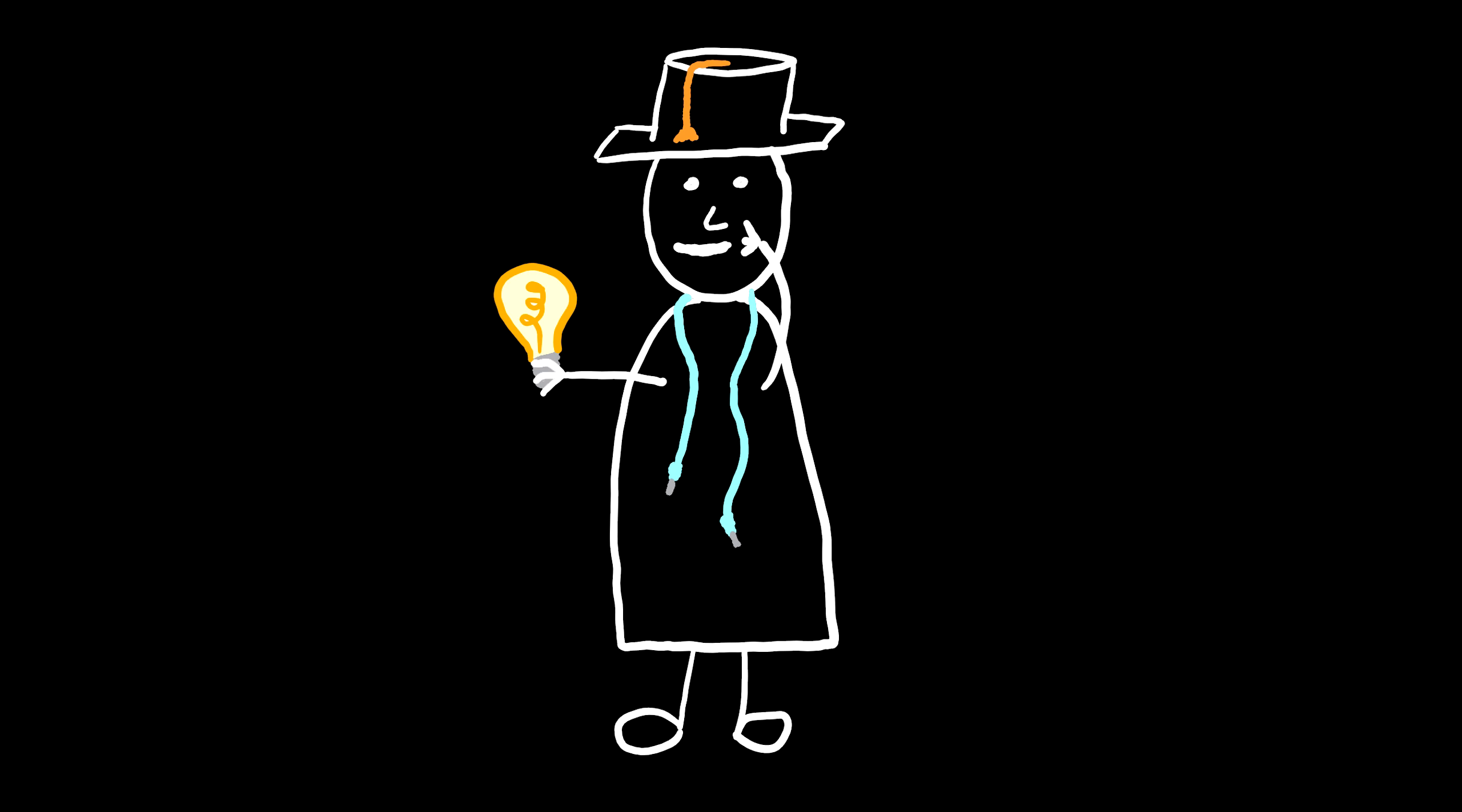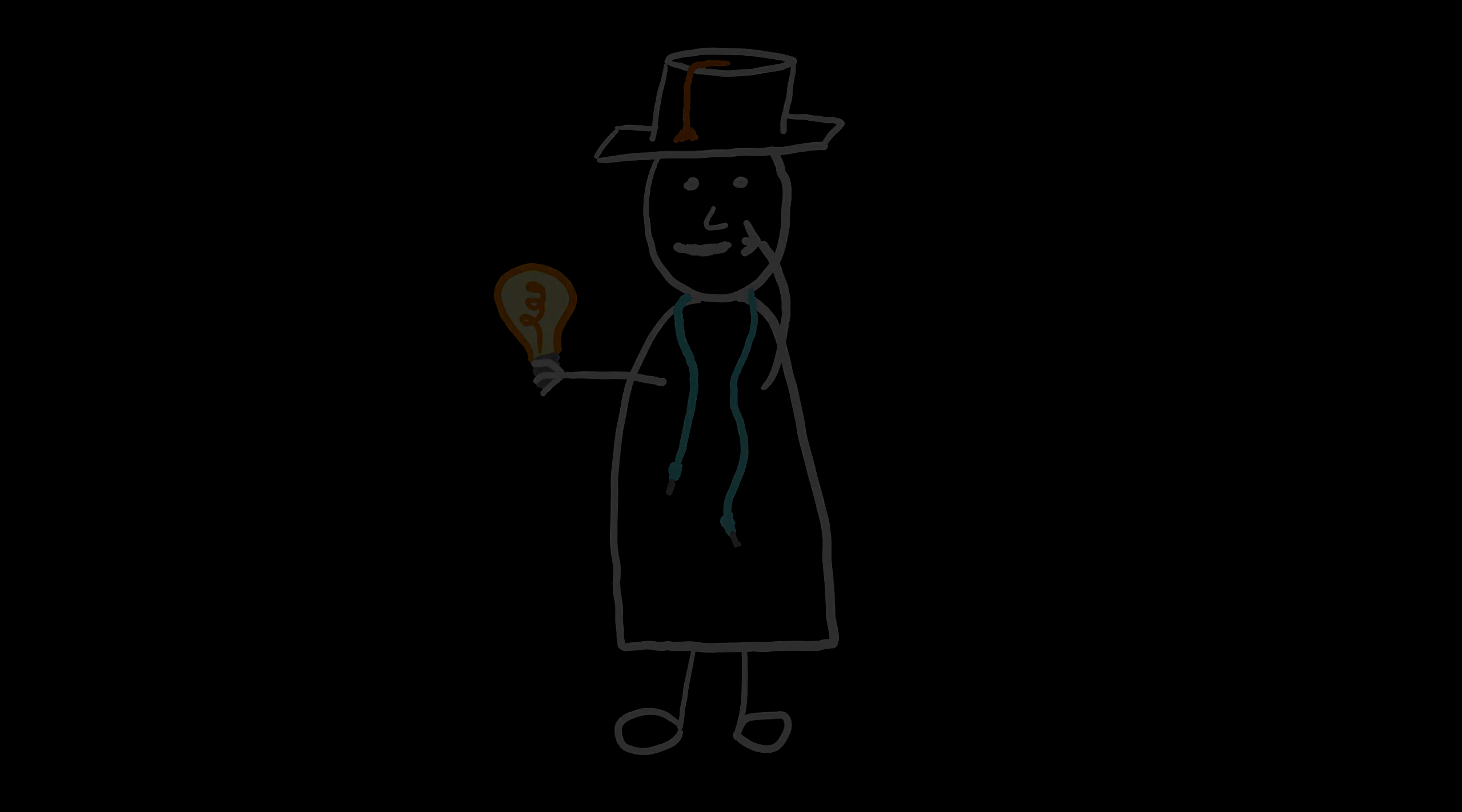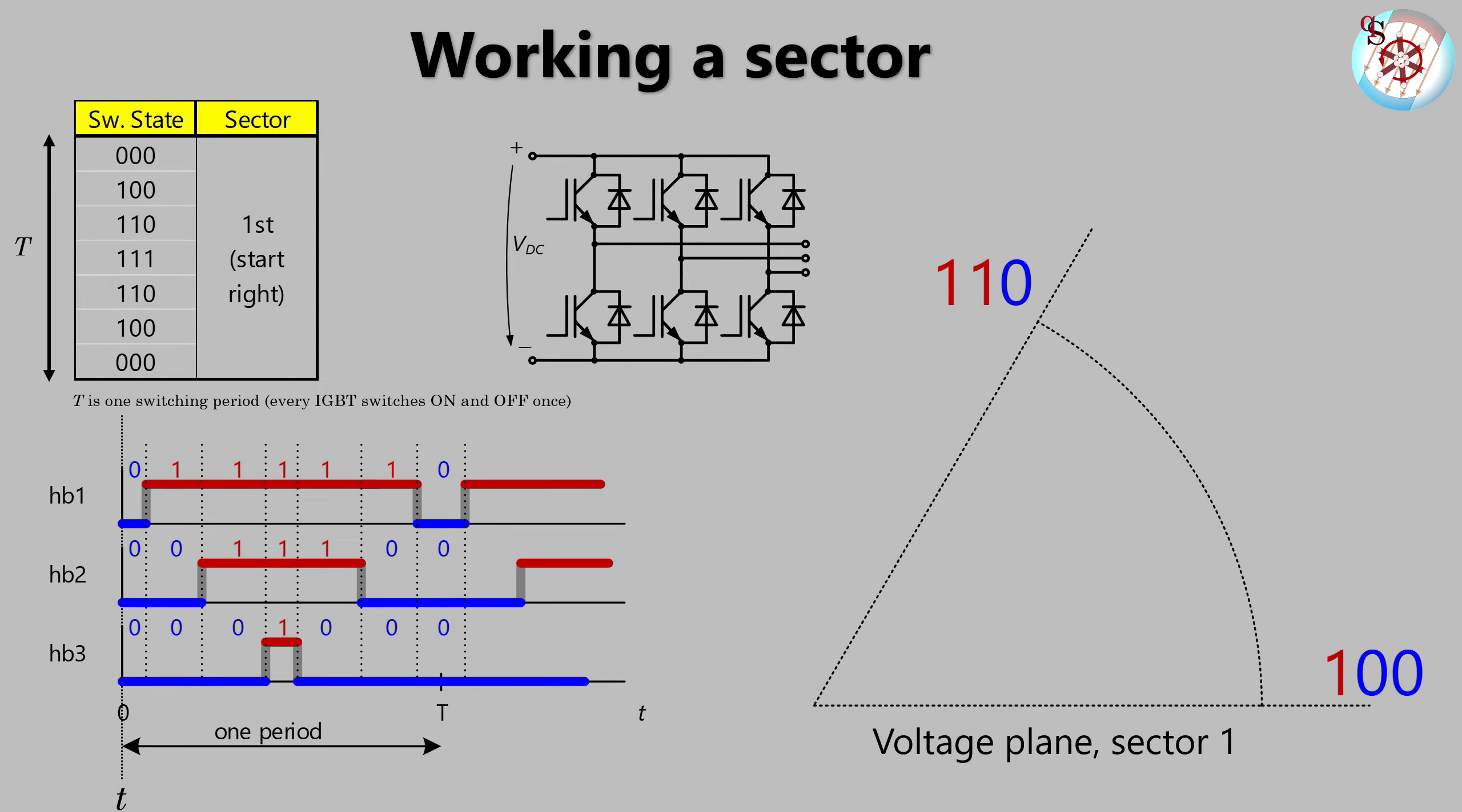How do I actually work one sector? The sector we'll be looking at is sector 1. Within the time frame of one transistor switching period, a switching voltage vector is created with a switching sequence in the sector.